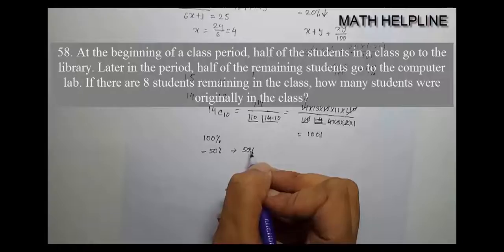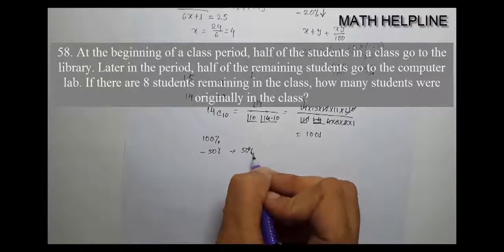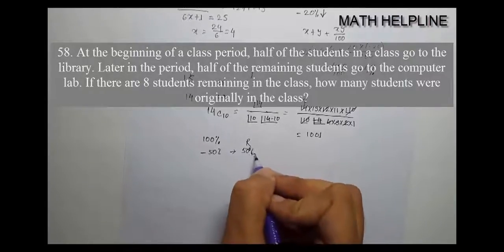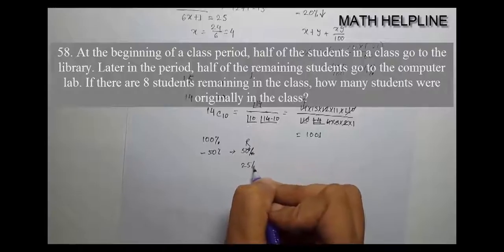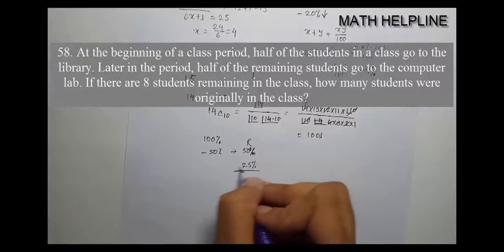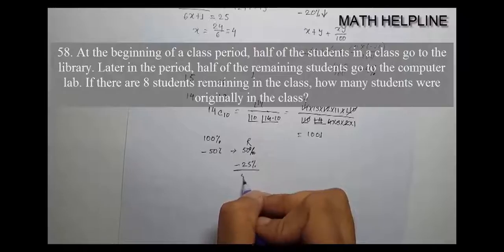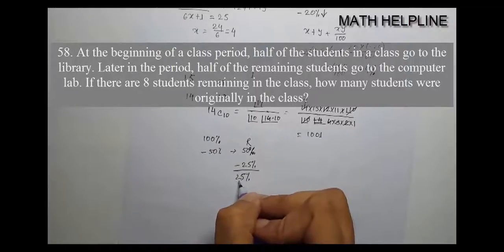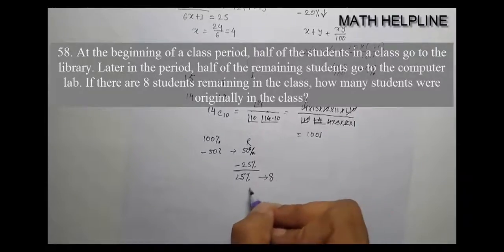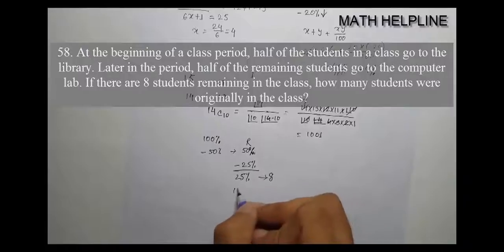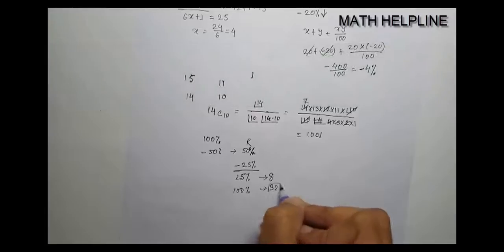Then from the remaining 50 percent, half went to the computer lab. That's 25 percent who went to computer lab. So 25 percent remained. The problem says 8 students remained, which is 25 percent. So 100 percent would be 8 times 4, which equals 32 students. The answer is 32.